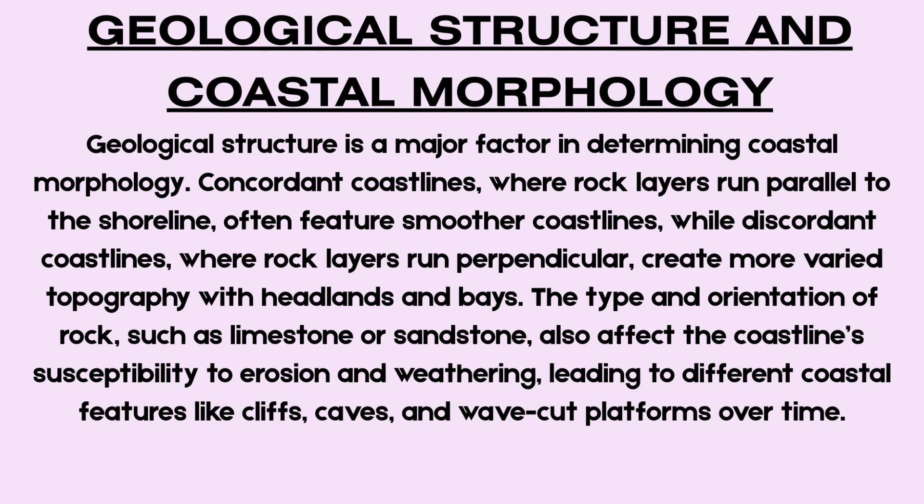Geological structure refers to the way rocks are layered, folded or faulted. On concordant coastlines, rock layers run parallel to the coast, and erosion often exploits lines of weakness to form features such as coves, with Lulworth Cove on the Dorset coast being a well-known example. On discordant coastlines, where different rock types lie perpendicular to the shoreline, the contrast in resistance creates alternating headlands and bays, as seen along the Dorset coastline. Joints, bedding planes, faults and folds all contribute to how susceptible rock is to marine erosion, with heavily jointed rocks or those with faults tending to erode faster.